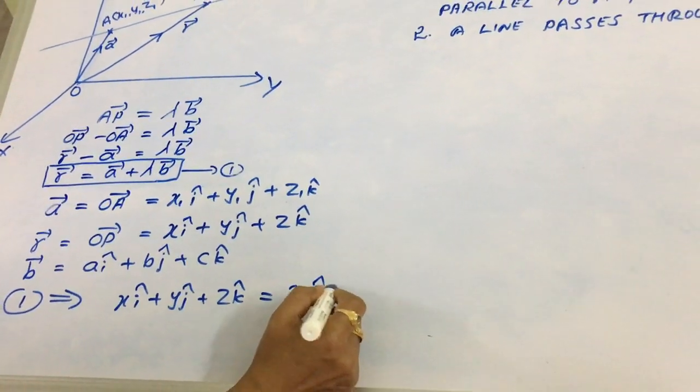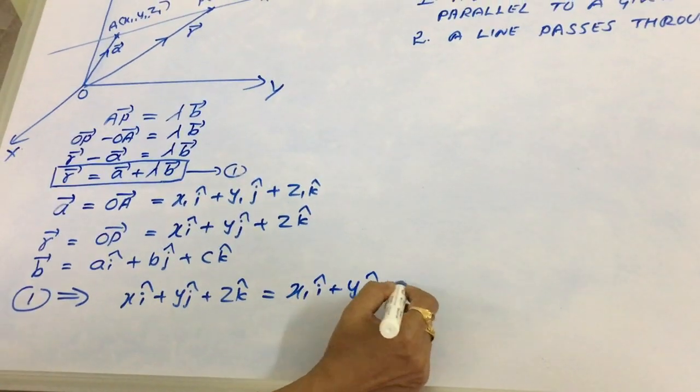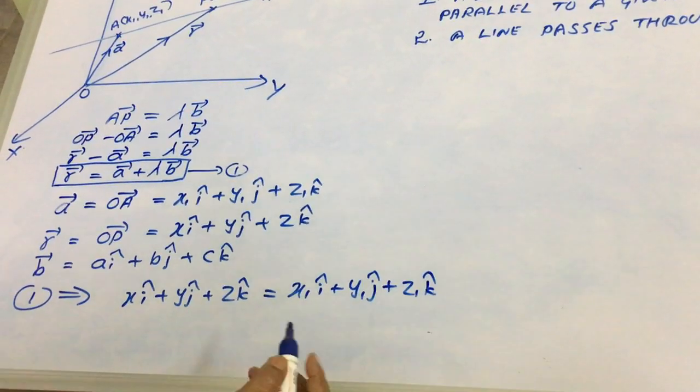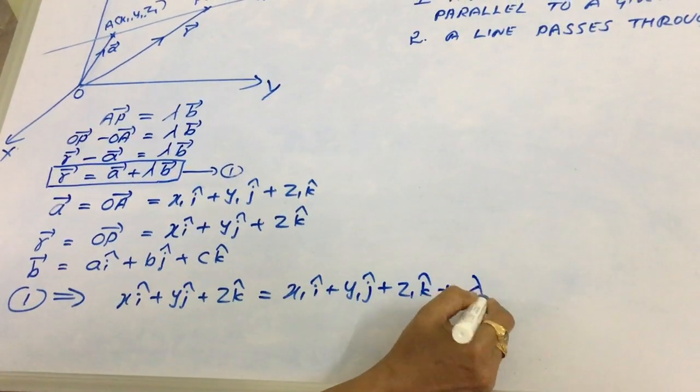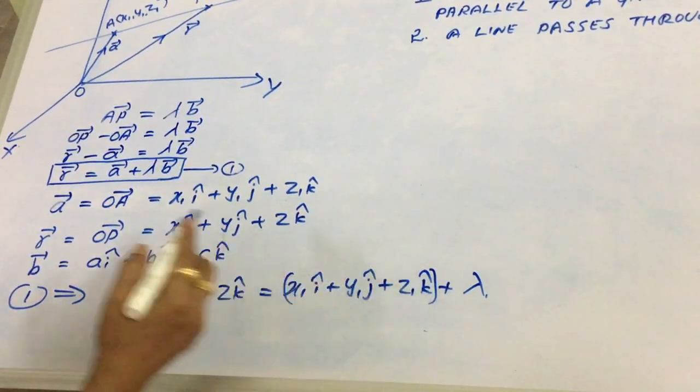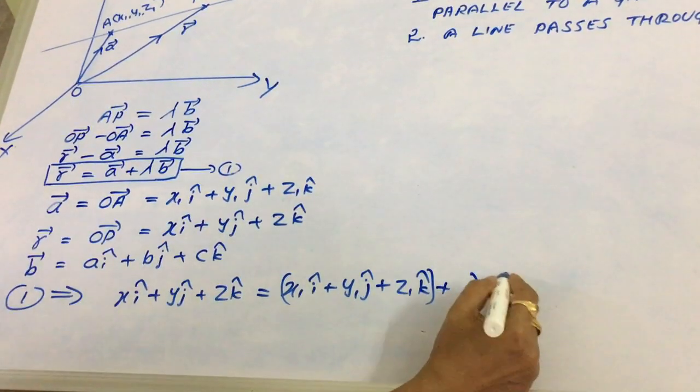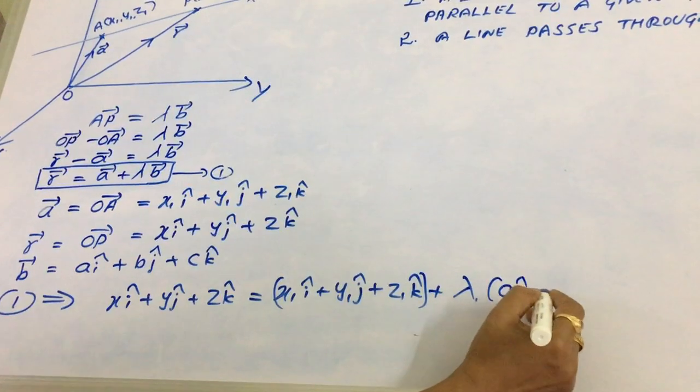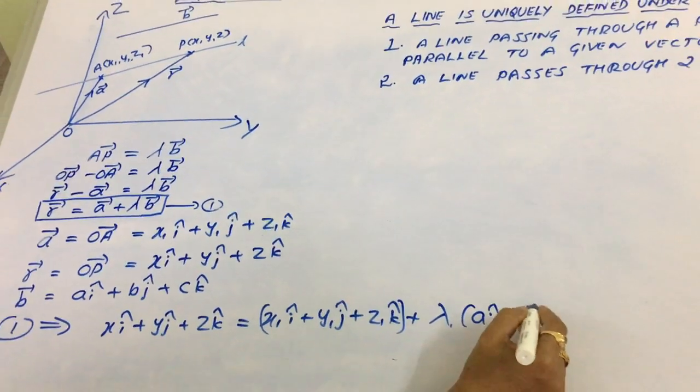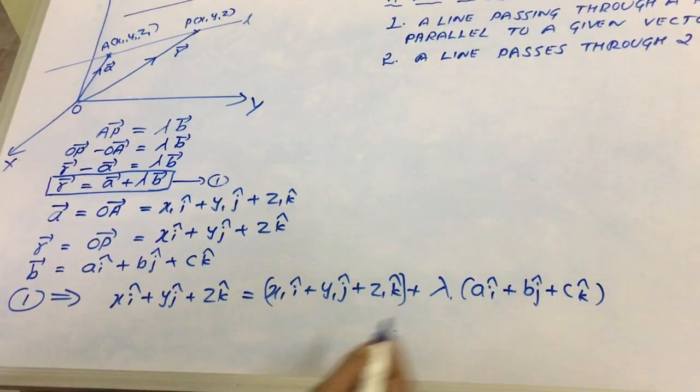That is, x1 i-cap plus y1 j-cap plus z1 k-cap plus lambda times vector B. Vector B is A i-cap plus B j-cap plus C k-cap.